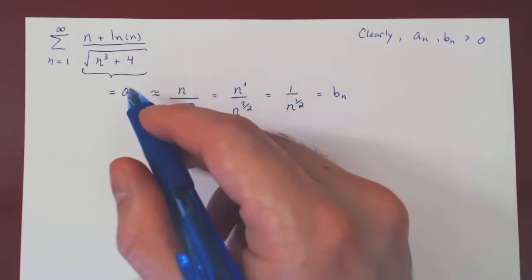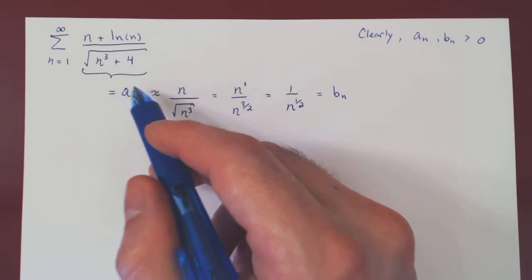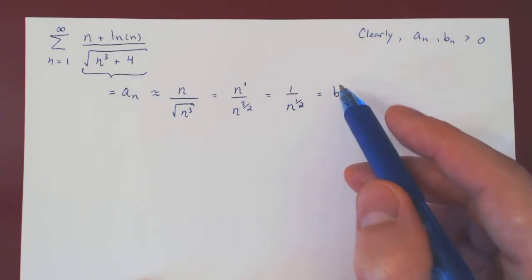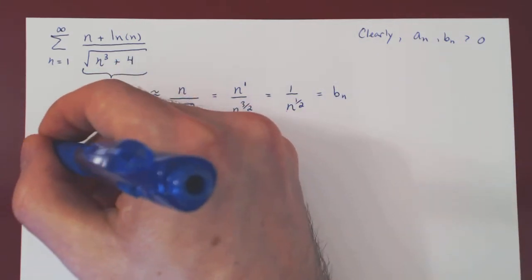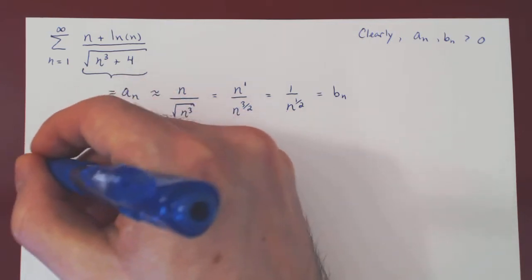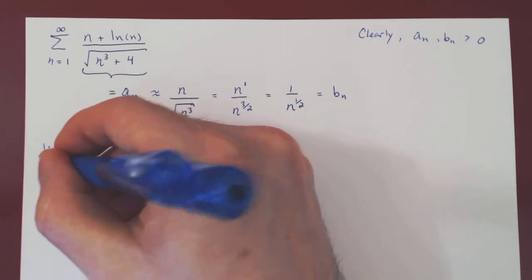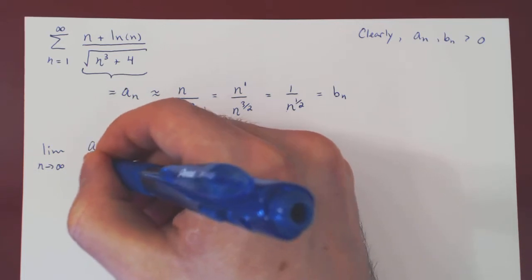And all we have to show now is that our intuition is correct. That, indeed, when n is large, an is roughly bn. And we check this, of course, by considering the limit, as n goes to infinity, of an over bn.